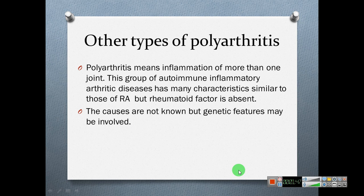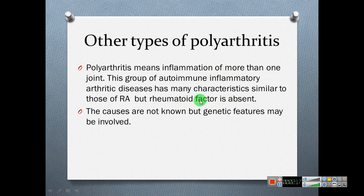Other types of polyarthritis — polyarthritis means inflammation of more than one joint. This group of autoimmune inflammatory arthritic diseases has many characteristics similar to those of rheumatoid arthritis, but the rheumatoid factor is absent. The causes are not known, but genetic factors may be involved.